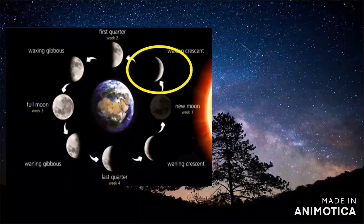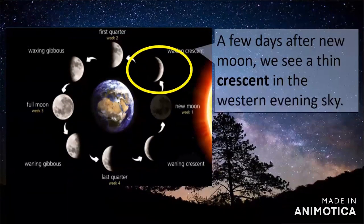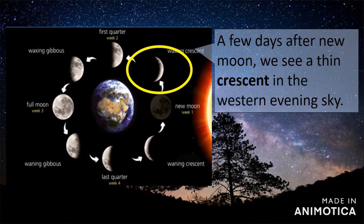The second phase is the crescent. A few days after the new moon, we see a thin crescent in the western evening sky — that is called the crescent moon. The crescent moon waxes, or appears to grow, after each night.